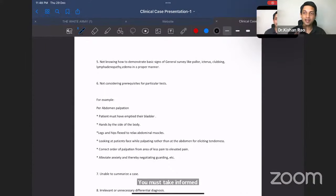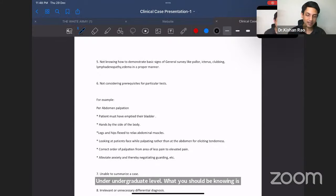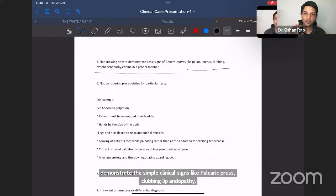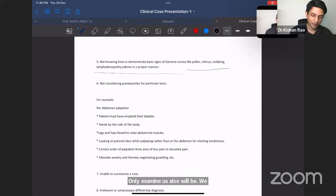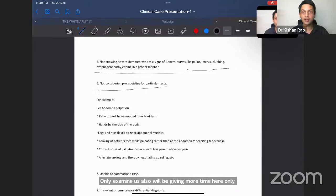And in the exam, under undergraduate level, what you should be knowing is demonstrate the simple clinical signs like pallor, cyanosis, clubbing, lymphadenopathy. This is what I expected. Most of the students will be stuck here only. Examiner also will be giving more time here only, before, not considering prerequisites before particular tests. For example, examiner will ask you to demonstrate clubbing. Even though you would have asked the consent to explain everything before, when you examine, ask you to demonstrate, start from explain to the patient only.